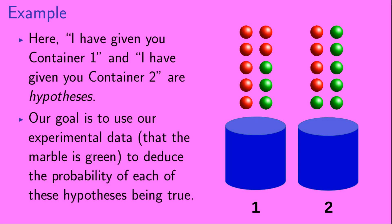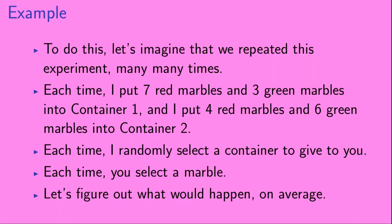Now, what is the probability that I have given you container 1, and what is the probability that I have given you container 2? Here, 'I have given you container 1' and 'I have given you container 2' are hypotheses. Our goal is to use our experimental data — namely, that the marble is green — to deduce the probability of each of these hypotheses being true. To do this, let's imagine that we repeated this experiment many, many times. Each time, I put 7 red marbles and 3 green marbles into container 1, and 4 red marbles and 6 green marbles into container 2. Each time, I randomly select a container to give to you, and each time you select a marble.